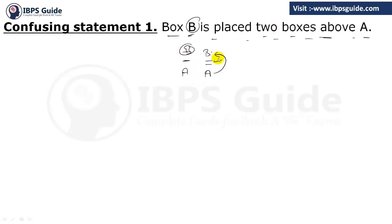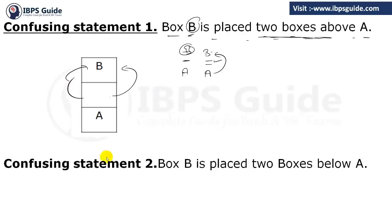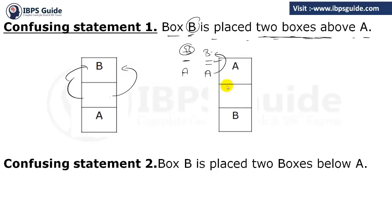To clarify: box B is placed two boxes above means there is one box between A and B. If A is here, leaving one box, then it will be B — that is the second box above A. Similarly, the second confusing statement is: box B is placed two boxes below. Same logic applies. When it is two boxes below A, leaving one box, then it will be B.